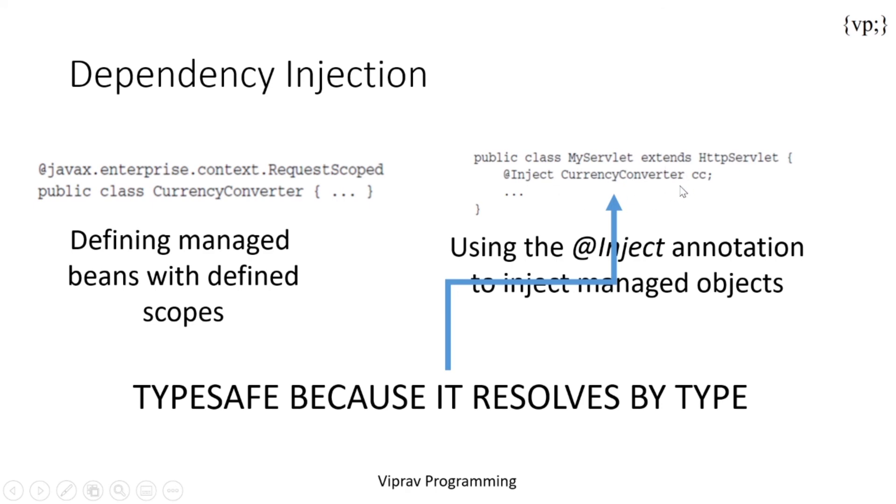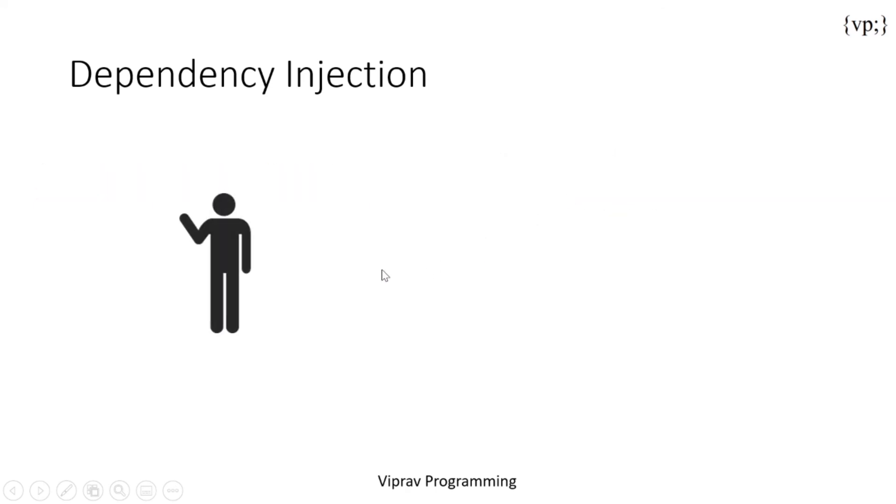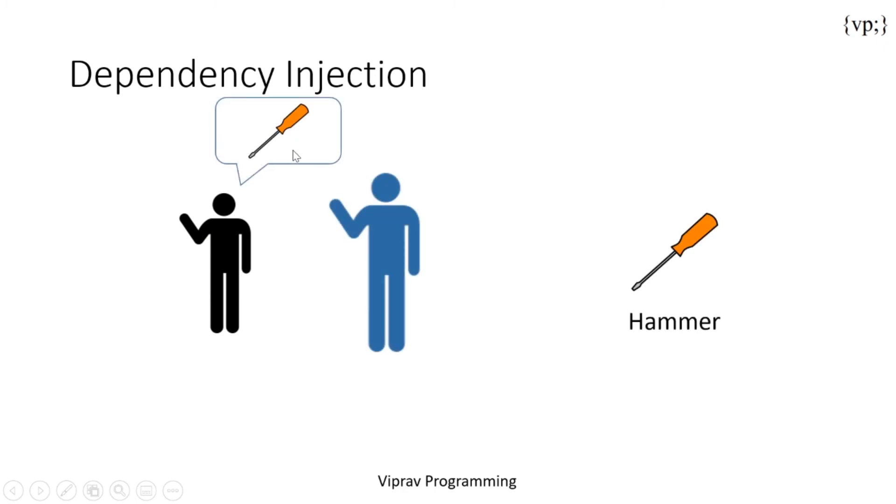Now to give an example of that, let's take a look at our guy over here again. So now he's smarter and he asks for a screwdriver, literally the screwdriver. The type is called screwdriver. So your container goes and gets the actual screwdriver. And then you're happy because this is exactly what you wanted. And this is what it means to be type safe.